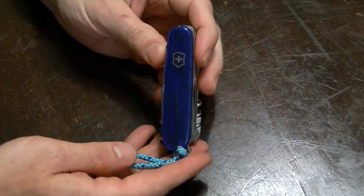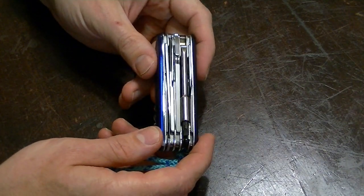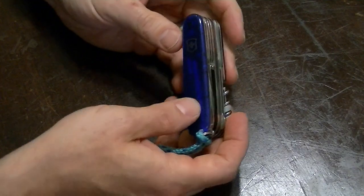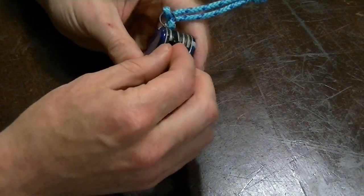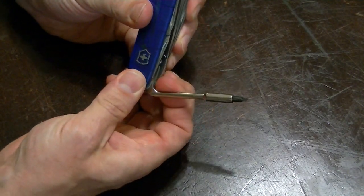Next, Cybertool 34 slash M. Going forward, it'll be called the M. This one has the same stuff as the Explorer, but instead of having the dedicated inline Phillips, it has this Cybertool, which is just awesome.